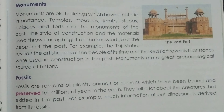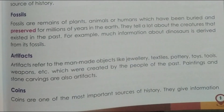Fossils are remains of plants, animals or humans which have been buried and preserved for millions of years in the earth. They tell us a lot about the creatures that existed in the past. For example, much information about dinosaurs is derived from fossils. Artifacts refer to man-made objects like jewellery, textiles, pottery, toys, tools, weapons etc. which were created by the people of the past. Paintings, stone carvings are also artifacts.